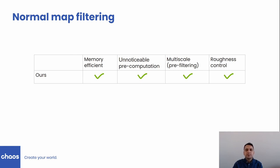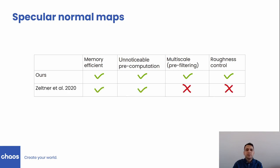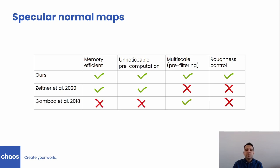Let's compare these properties to the current state of the art for rendering specular normal maps. Specular manifold sampling by Zeltner et al. is memory efficient and fast to build, requiring about three times more memory than our method. But it does not provide pre-filtering, which proves to be inefficient for very small glints inside the pixel. The spherical histograms approach by Gamboa et al. requires gigabytes of memory and expensive pre-computation; however, they perform pre-filtering using lookup tables.